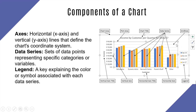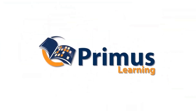We also have the grid lines, which help us to decipher the data entries in the data series. Then we have the chart title, the plot area, the chart area, and the axis and axis titles.